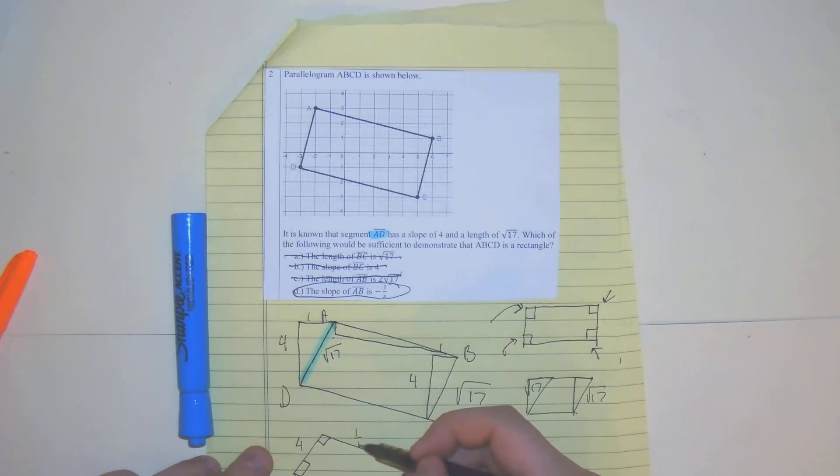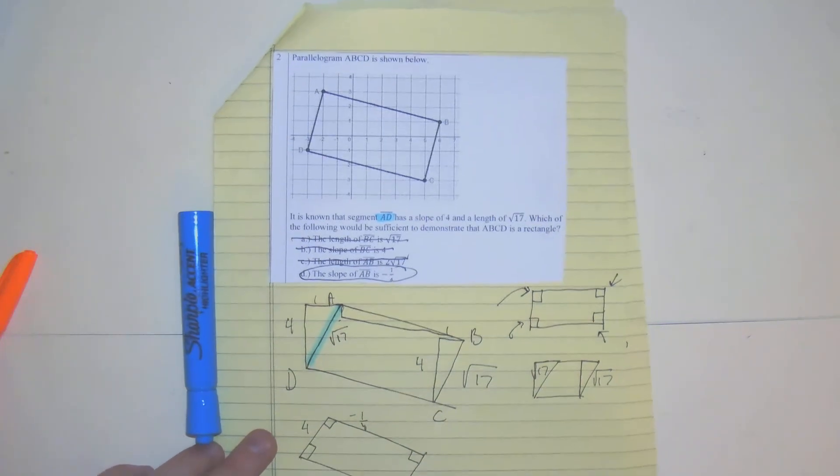So that's four, and this is one over four. They're negative reciprocals of each other, okay?